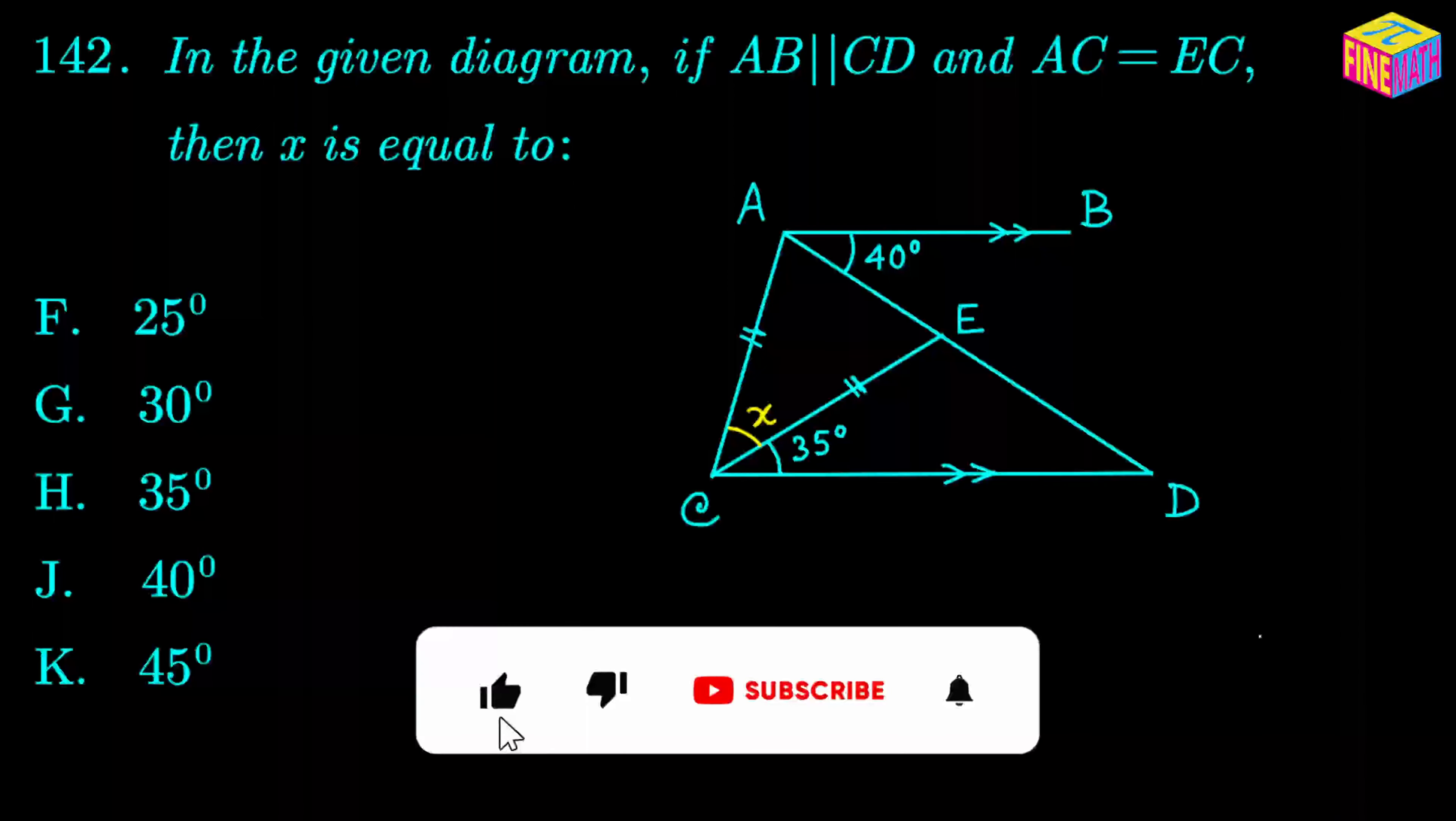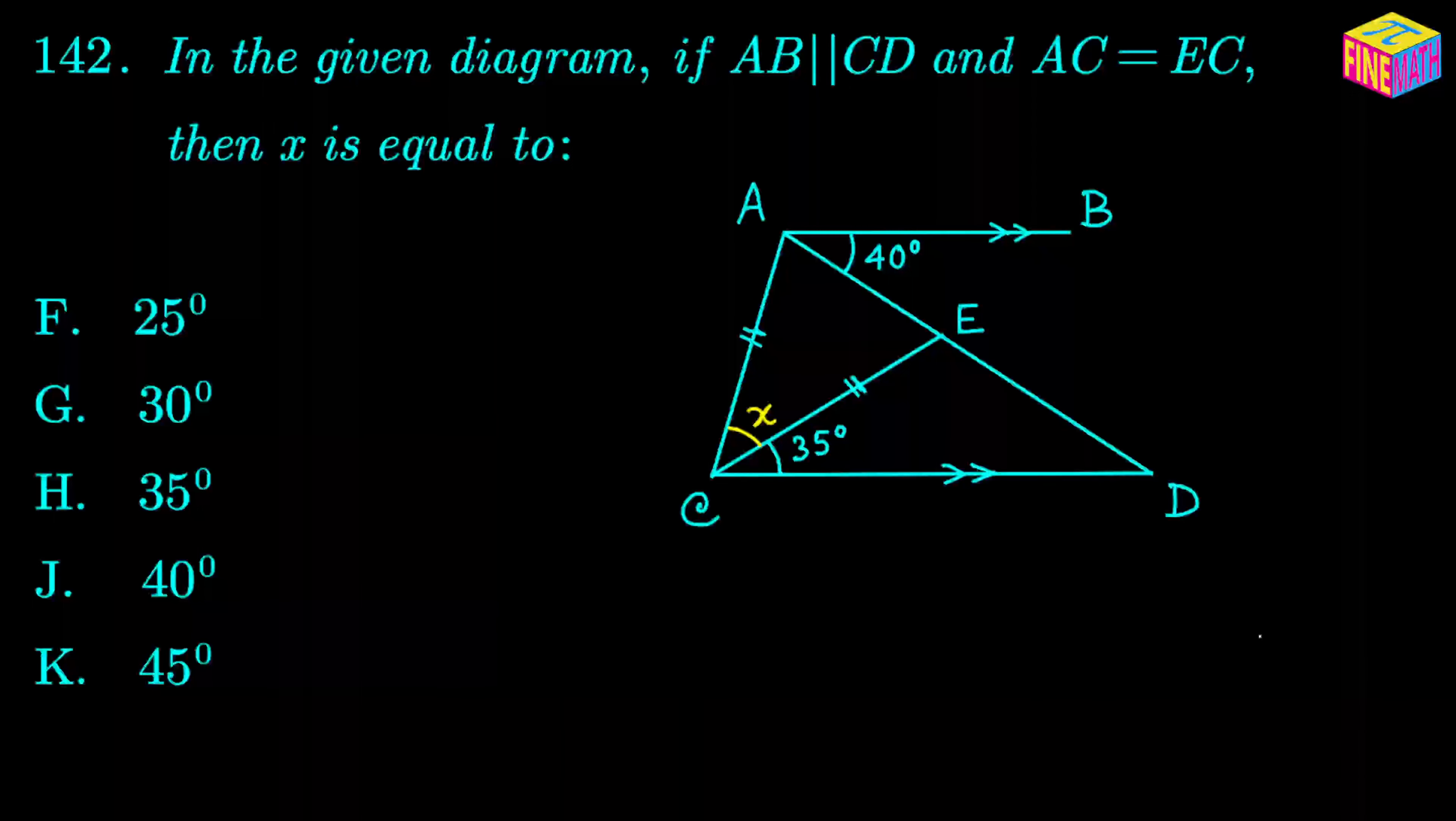Here the question says in the given diagram, if AB is parallel to CD and AC is equal to EC, then X is equal to which of the following five angles. So essentially we have to find out the size of the angle X, which is actually the angle ACE, based on the given information. To solve this kind of problem we have to carefully note the provided information in the question.